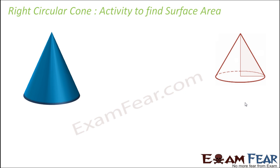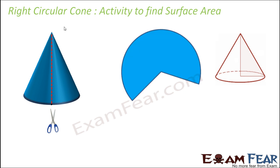Now let's do another activity to find the surface area of the cone. Take a right circular cone — you can use a joker cap, which is typically cone-shaped — and cut it along a line from a point on the circular perimeter to the apex. When you open it up, you get a flat sheet. The area of this sheet is the curved surface area of the cone. If you notice, this sheet is made up of many small triangles.